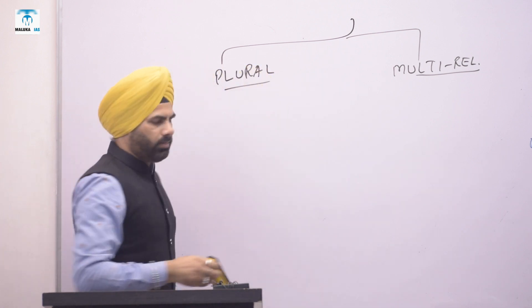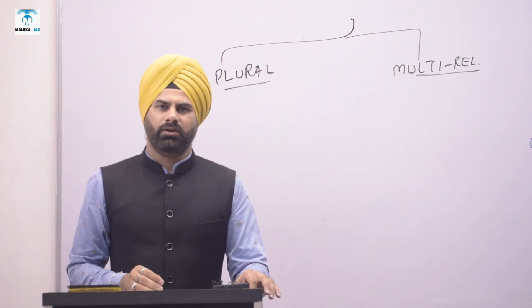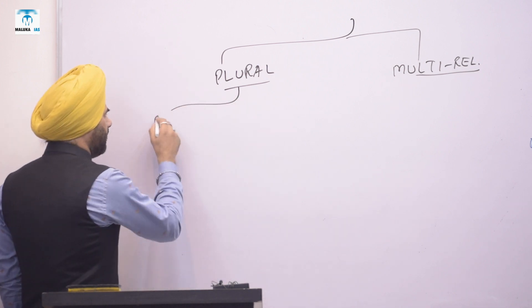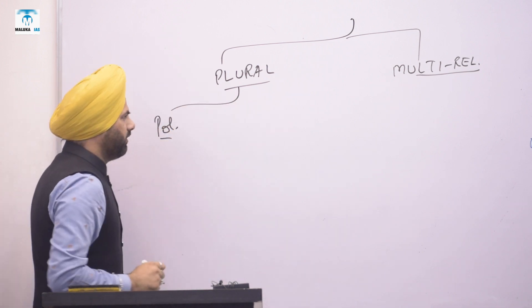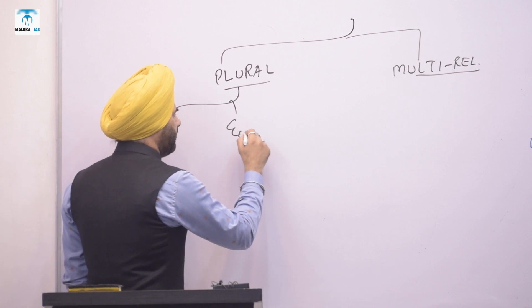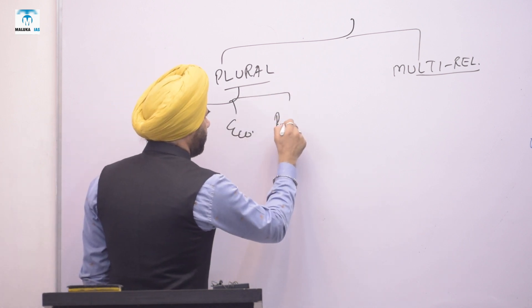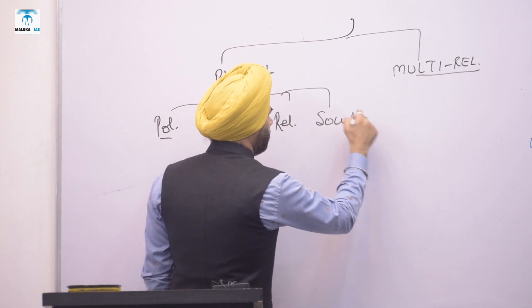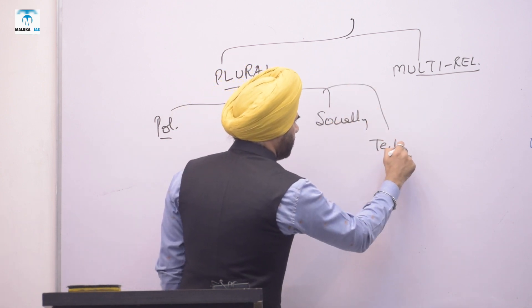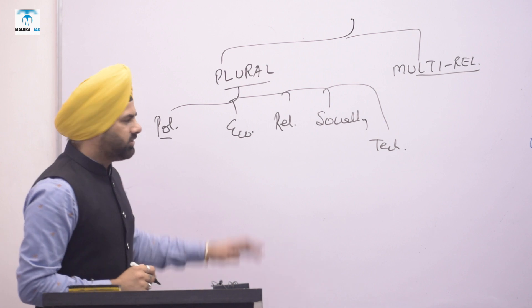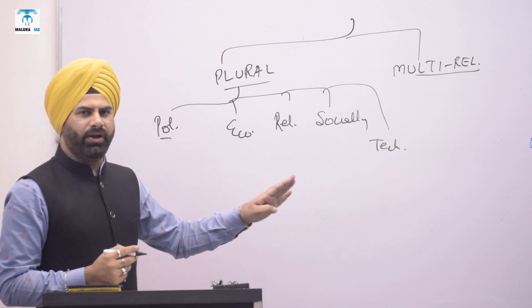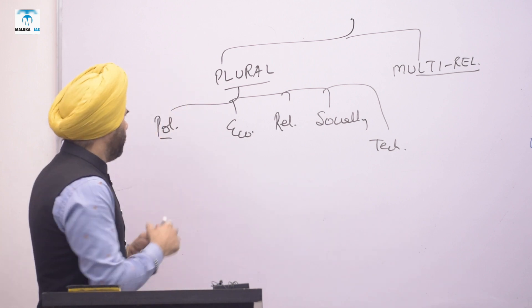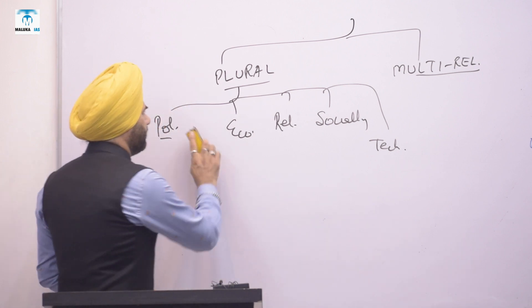Let us start the answer. We say it is a plural society. How can we say it is plural? We are politically a plural society. We are economically plural. We are religiously plural. We are socially plural. We are technologically plural. I will tell you every point with examples. For example, politically plural — we are politically plural. How are we politically plural?